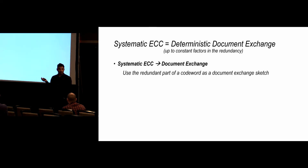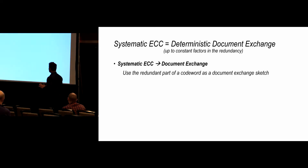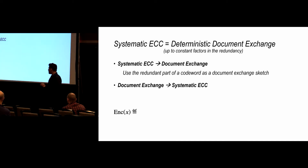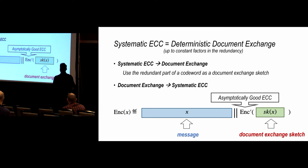The relationship is really simple. Given a systematic error-correcting code, to sketch the document I encode it, throw away the systematic part, and send only the redundant part as the sketch. The receiver has a string differing very little from mine, puts it together with the redundancy, runs the usual decoding algorithm, and gets my string. Going the other direction: given a document exchange protocol, make a systematic code by outputting the message first, then adding the document exchange sketch. Since the sketch part is small, encode it with a simple error-correcting code — this blows things up by only a constant factor.